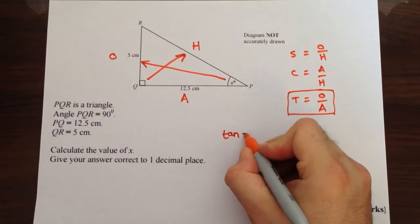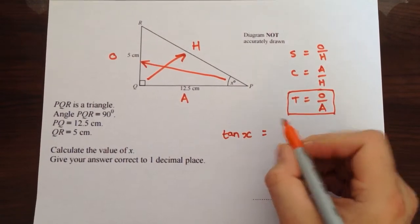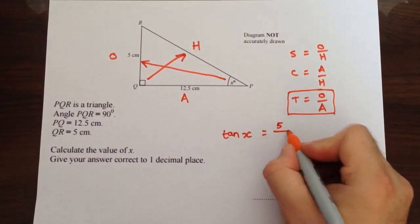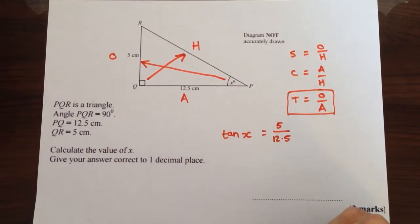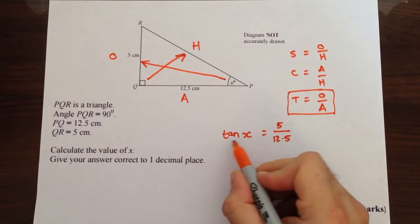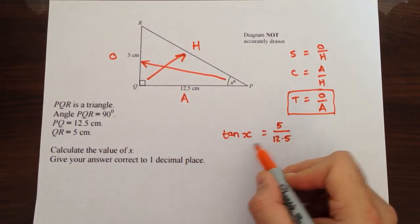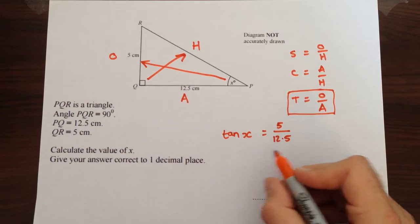Now we substitute in what we know. We know tan of X equals the opposite, which is 5, divided by the adjacent, which is 12.5. Now all we need to do is get rid of that tan. And the opposite of tan is inverse tan or shift tan.